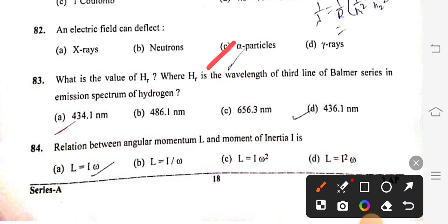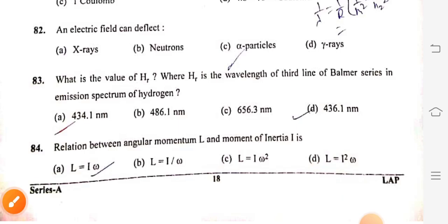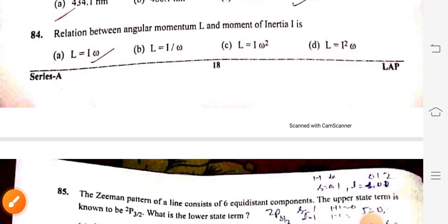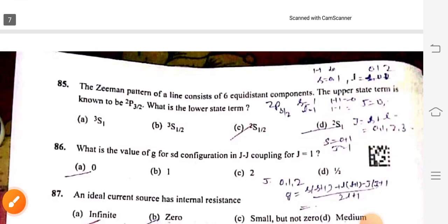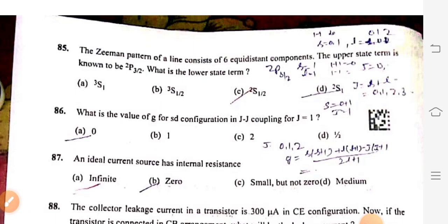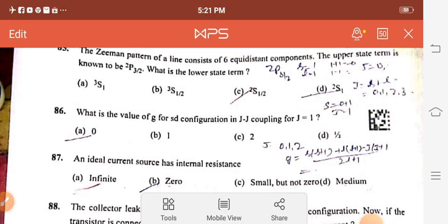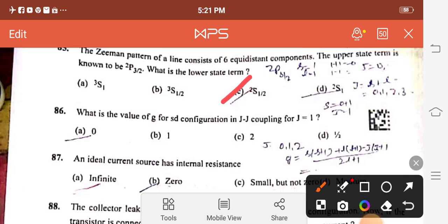Question 81: The minimum value of charge on any charged body may be charge of electron, that is 1.6 into 10 to the power minus 19 coulomb, option A. Question 82: An electric field can deflect alpha particle. Question 83: What is the value of H beta where H beta is the wavelength of third line of Balmer series in emission spectrum of hydrogen? Right option is 434.1 nanometer, option A. Question 84: Relation between angular momentum L and moment of inertia is L equals I omega, option A. Question 85: The Zeeman pattern of a line consists of 6 equidistant components. The upper state term is known to be 2P3 by 2. What is the lower state term? Right option is 2S half, option C.